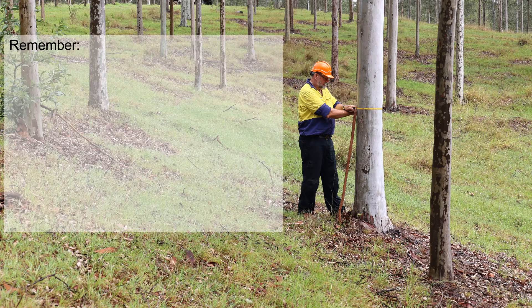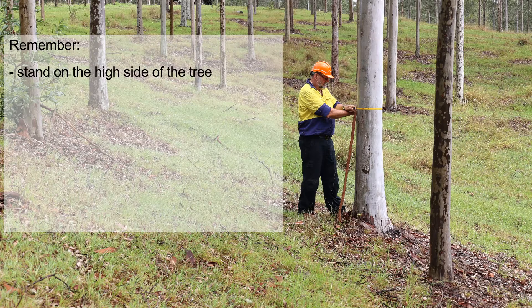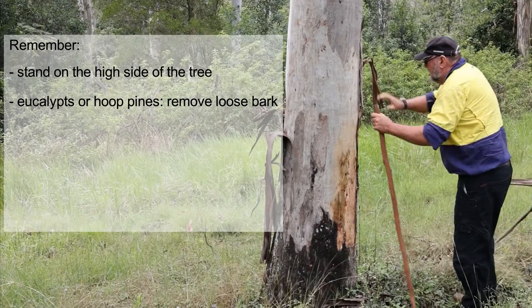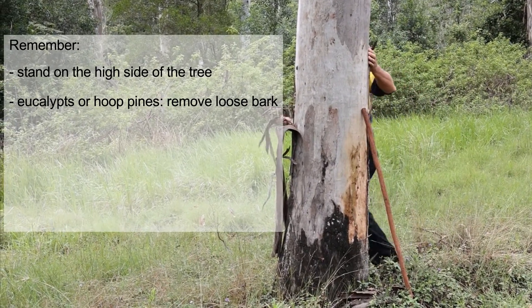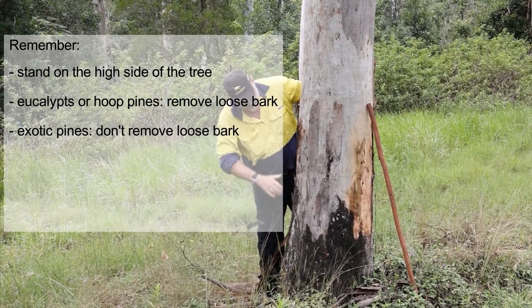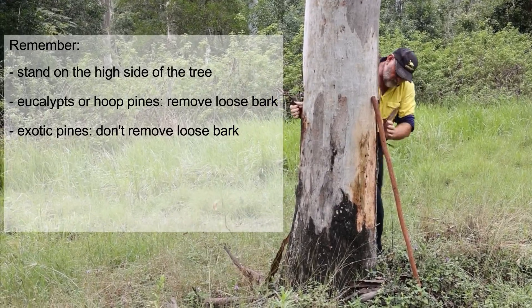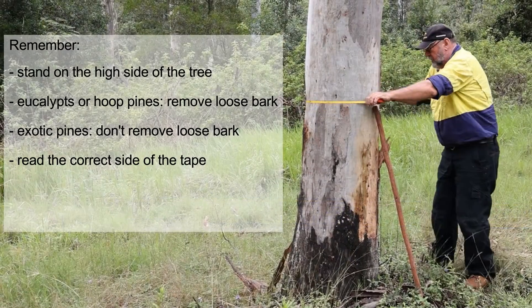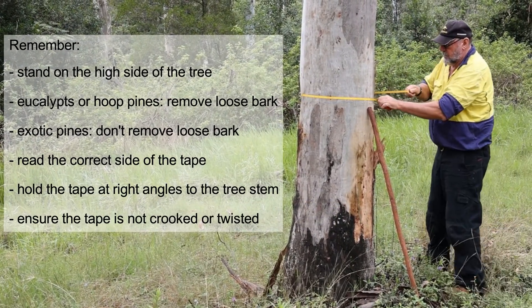There are a few points to remember. On a slope, stand on the high side of the tree. When measuring eucalypts or hoop pine, loose or flaky bark may be removed to obtain a true measurement, but for exotic pines, bark should not be removed. Make sure you are reading the correct side of the tape and ensure the tape is held at right angles to the stem and is not crooked or twisted. The procedure for standard straight trees is relatively simple, but there are often cases where it's not obvious how to measure DBH.